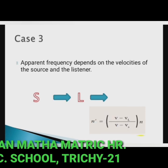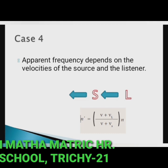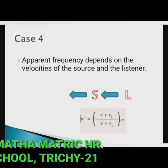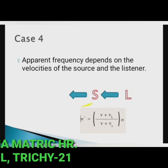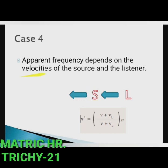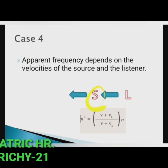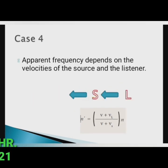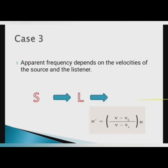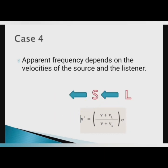Case 4 — both source and listener move in the same direction, with the listener following the source. The apparent frequency depends on the velocities of source and listener. Vs and Vl become opposite to that in Case 3, so by changing the signs the expression is: n' = (V + Vl) / (V + Vs) × n.